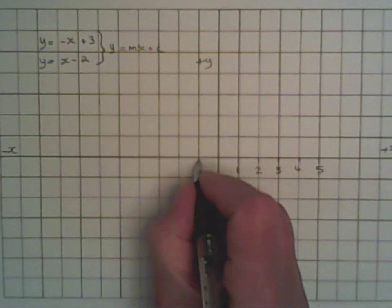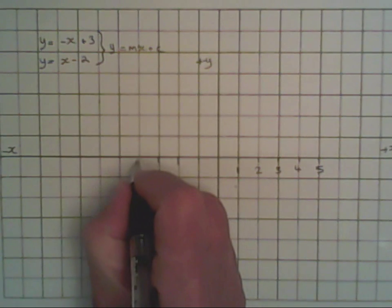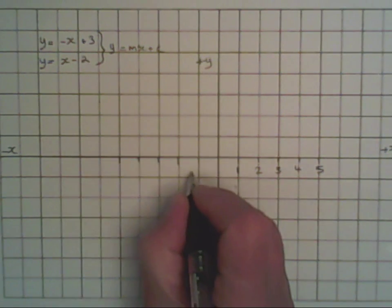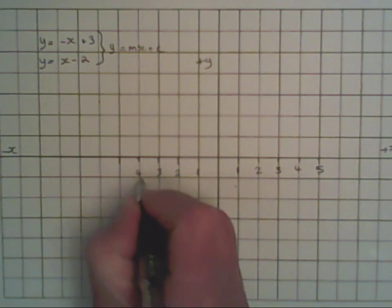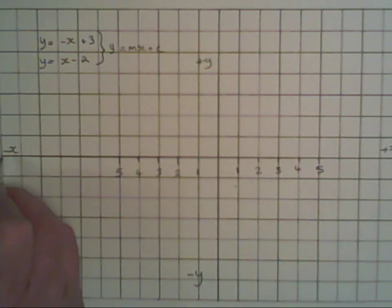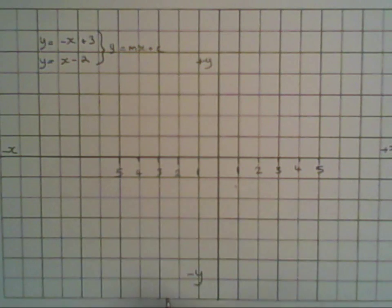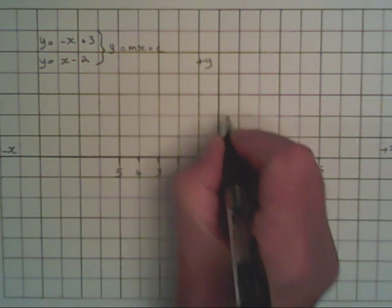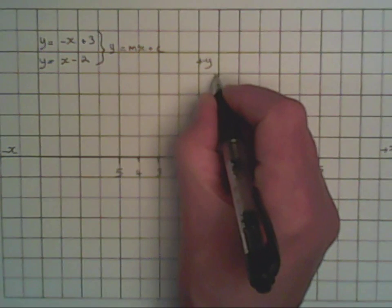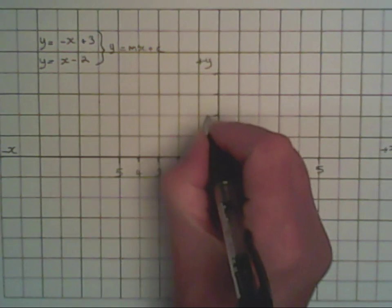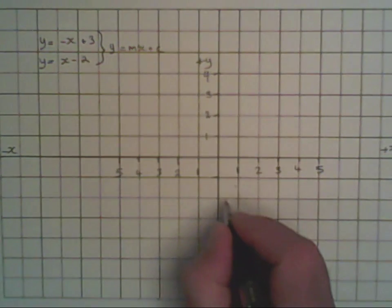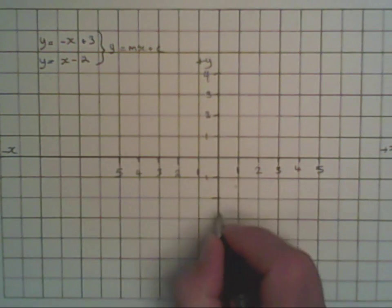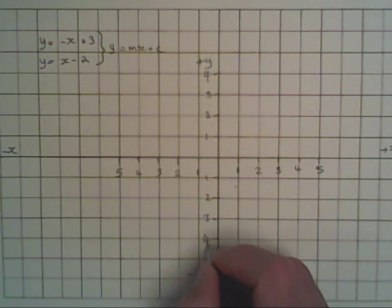And here we have 1, 2, 3, 4, 5. These are negative values. Because I put minus x here, we don't need to put minus signs on there. Similarly with the positives, 1, 2, 3, 4. And finally on the y-axis, 1, 2, 3, and 4.